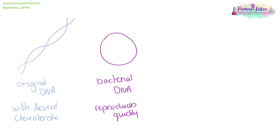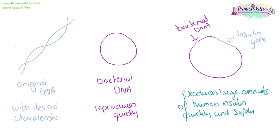Genetic engineering has produced fantastic advances, most notably in how we produce insulin. Previously, insulin was harvested from pig cells and wasn't very efficient. Now, the gene for insulin has been inserted into bacterial DNA; since bacteria reproduce very quickly, they produce large amounts of human insulin — quickly and safely. This is much better than pig insulin, and has made insulin production much cheaper, faster, and safer.